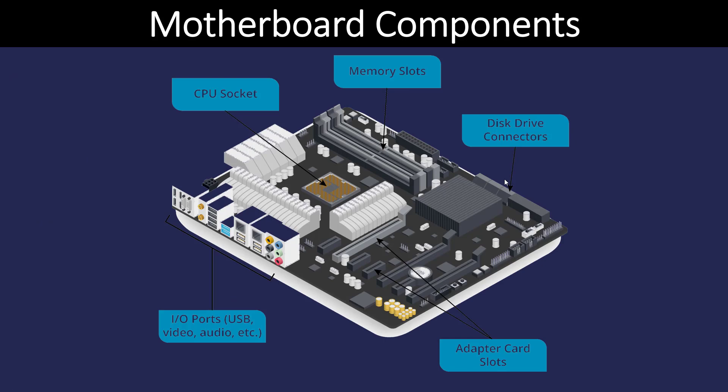If we look inside of a computer, the core component is going to be the motherboard — everything plugs into the motherboard. You should be able to look at a motherboard and identify the different components as we see in this particular diagram. You should be able to pick out where the CPU goes — it's typically a square socket — what the memory slots look like, which are usually very close to the CPU, the disk drive or SATA connectors, where the adapter card slots are, and the input-output ports: USB, video, audio, etc.